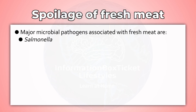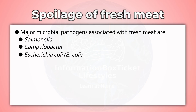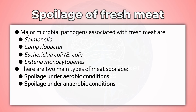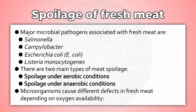Major microbial pathogens associated with fresh meat are Salmonella, Campylobacter, Escherichia coli, and Listeria monocytogenes. There are two main types of meat spoilage: spoilage under aerobic conditions and spoilage under anaerobic conditions.